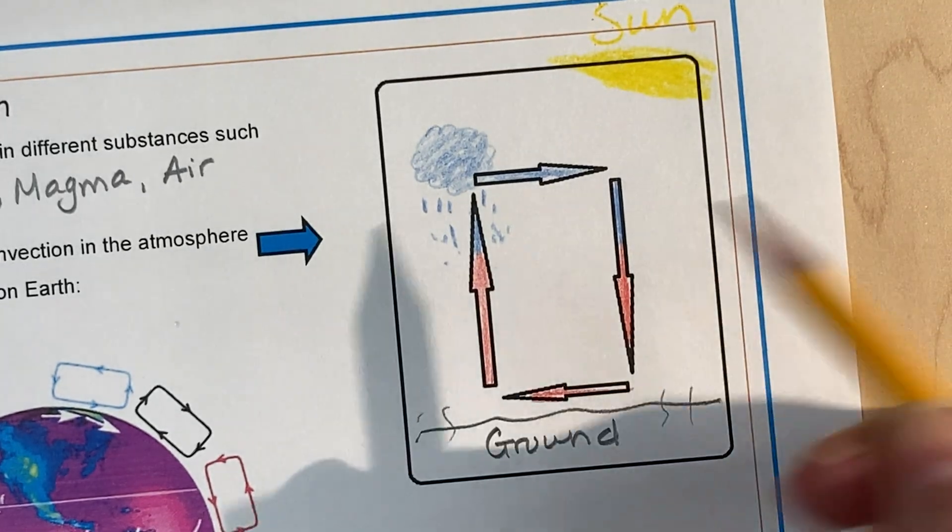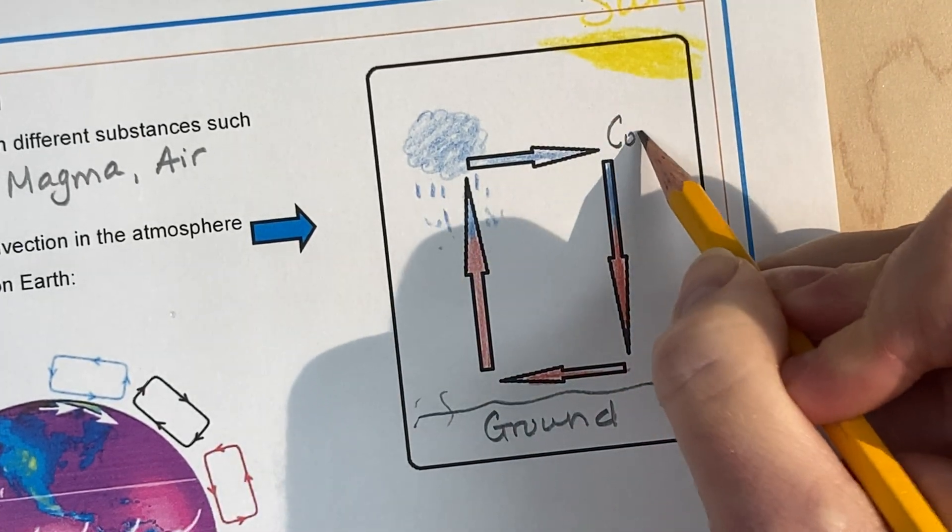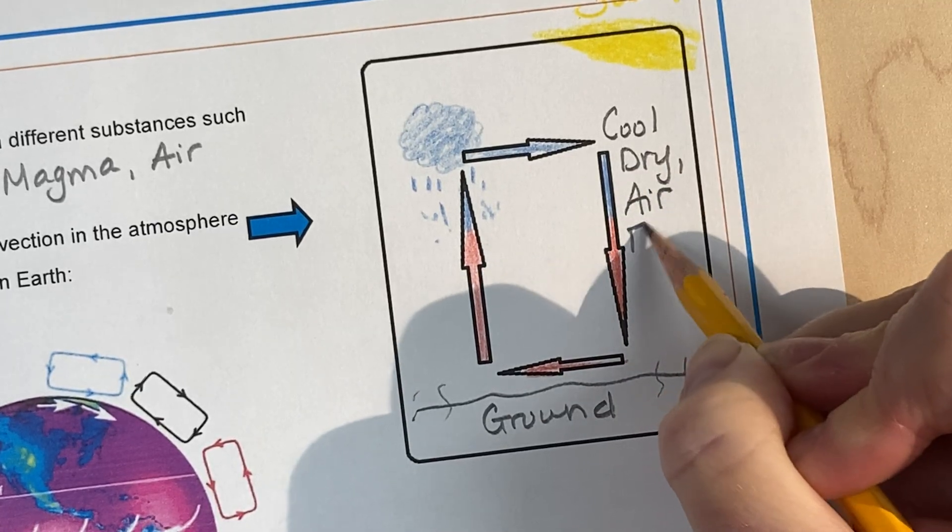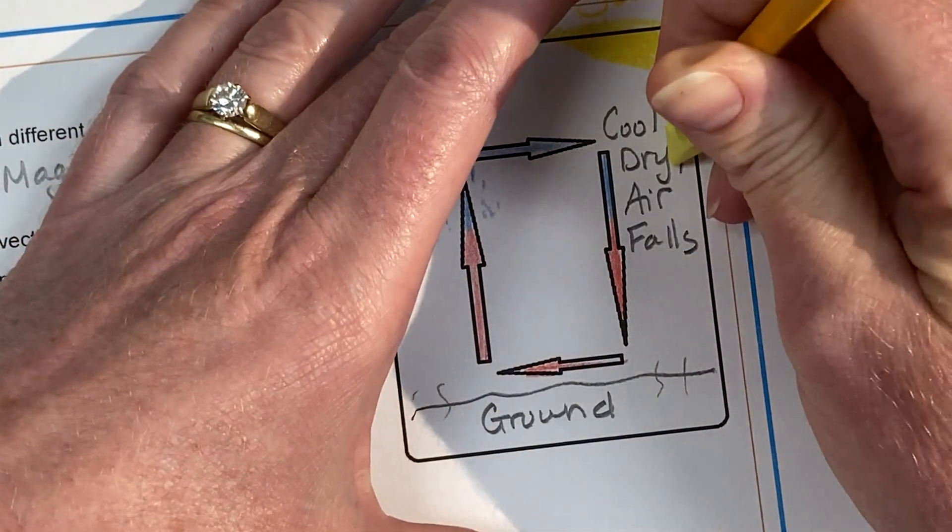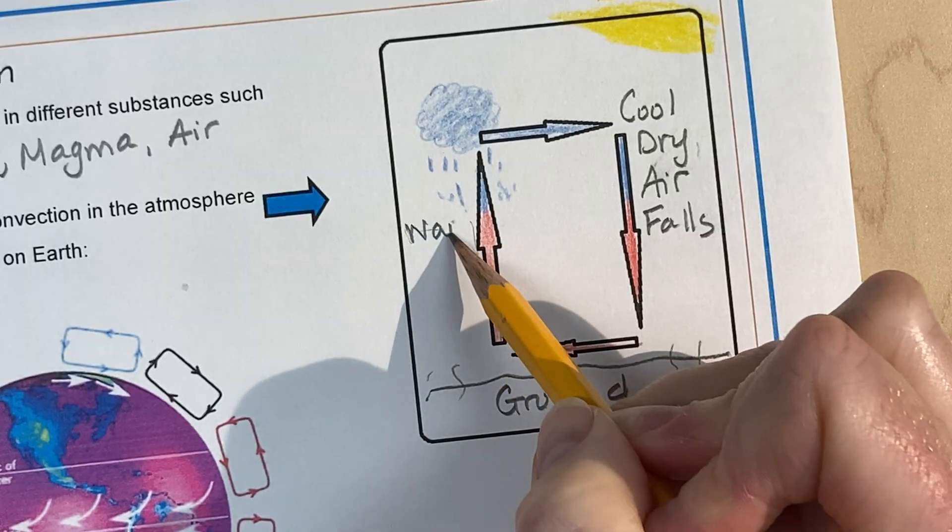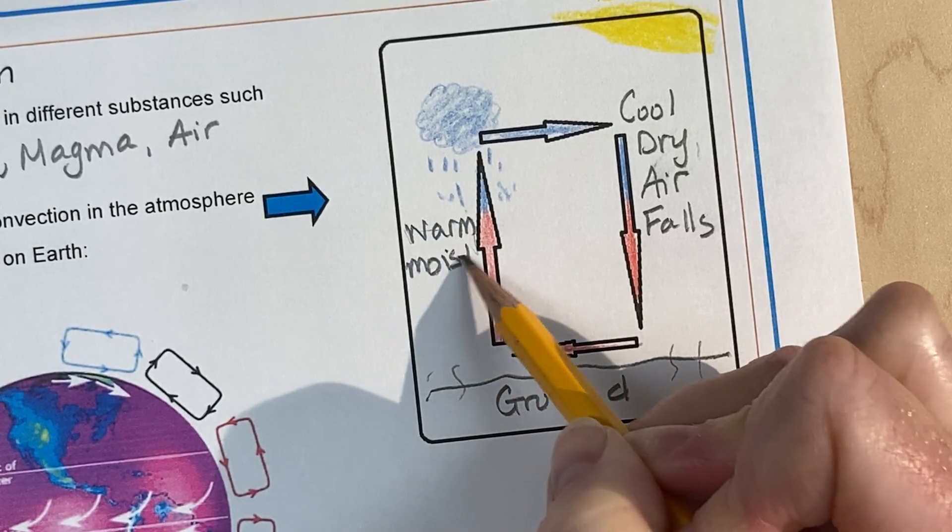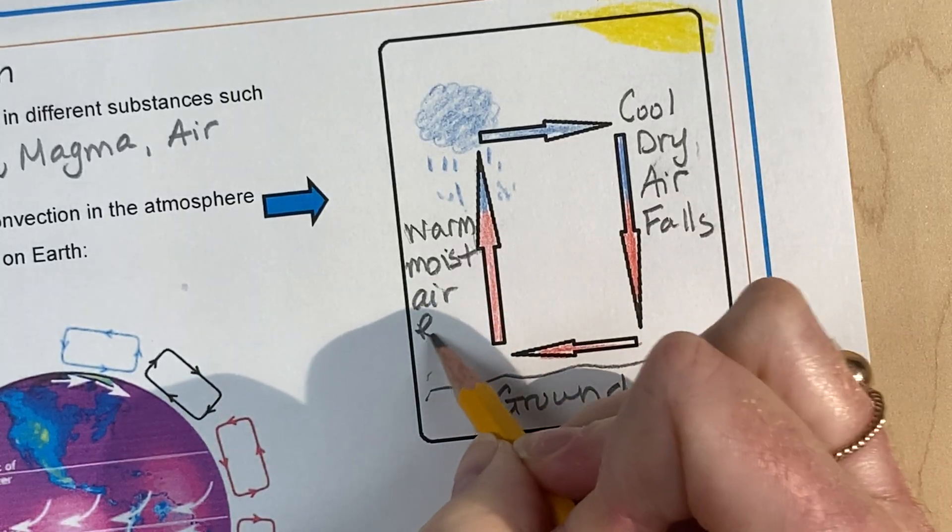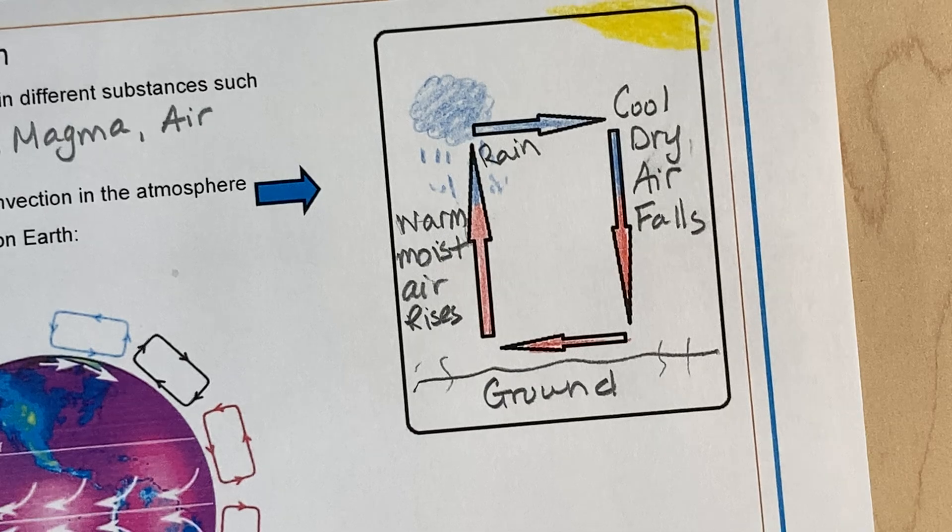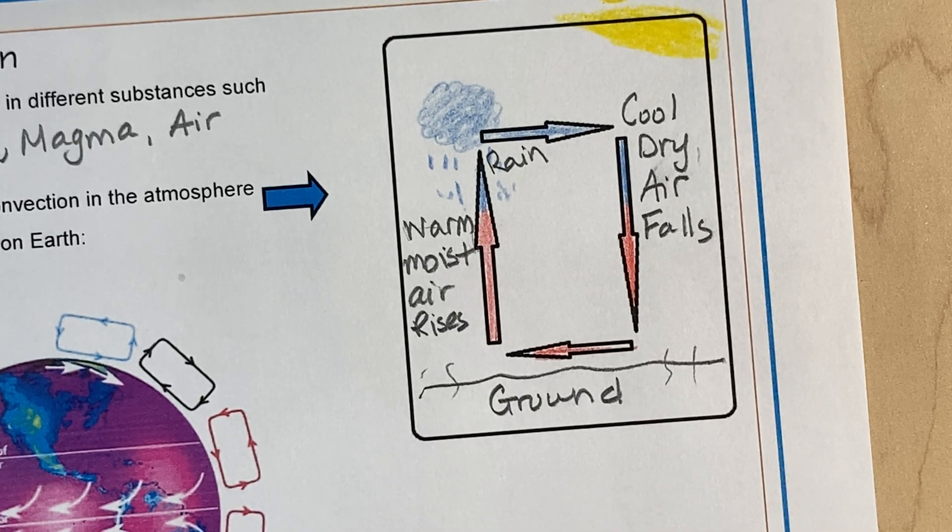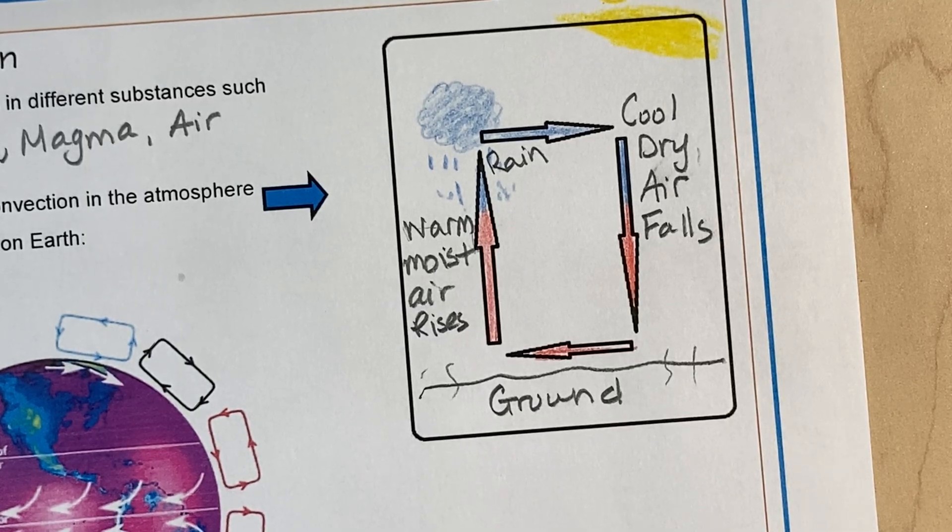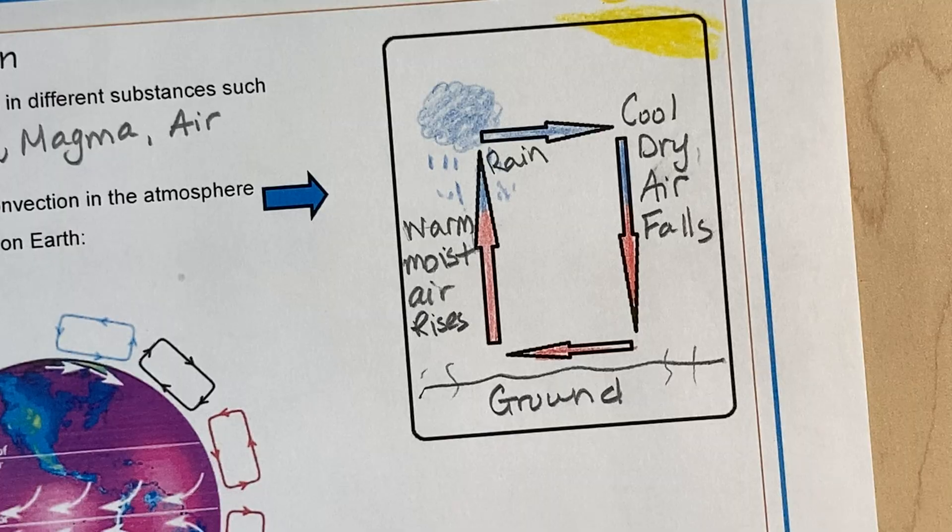Before the cool, dry air moves and falls, cool dry air falls, this is warm, moist air rises. And again, we have rain there. So this is the process of convection currents in the atmosphere, with air.